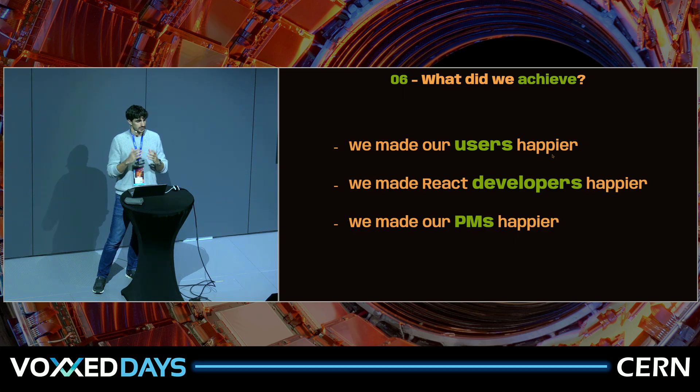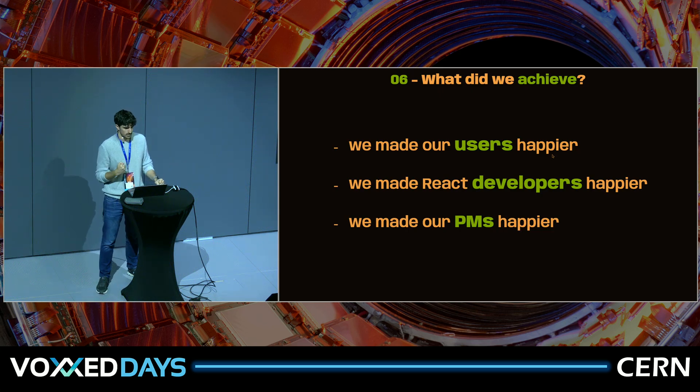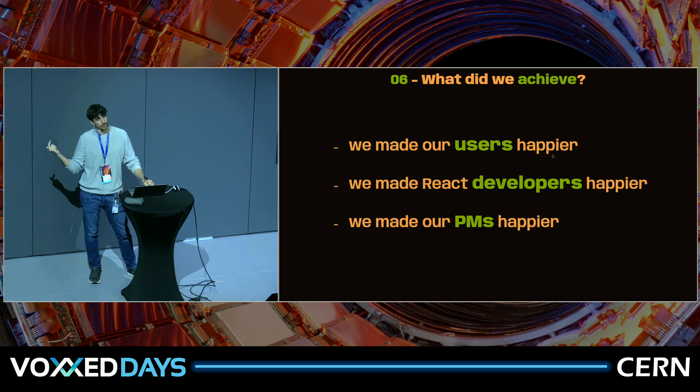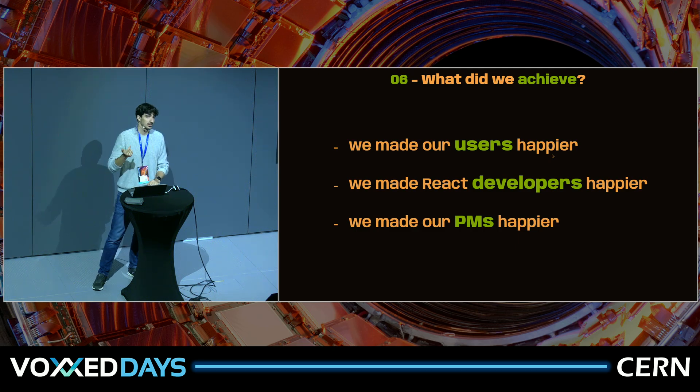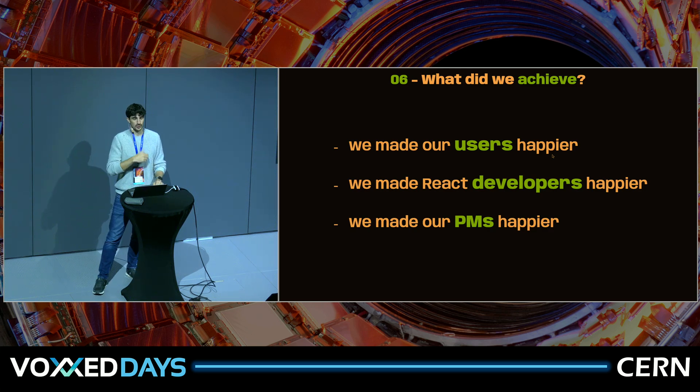So to summarize, what did we achieve? I would say we made our users happier. We made a more optimized application, providing a better user experience and raising fewer errors from the users. We made React developers happier. We cut overhead. Of course, we produce less error-prone code. And we need to test less code. Finally, we made our RPMs happier. We go to production faster and in a safer manner, I would say.